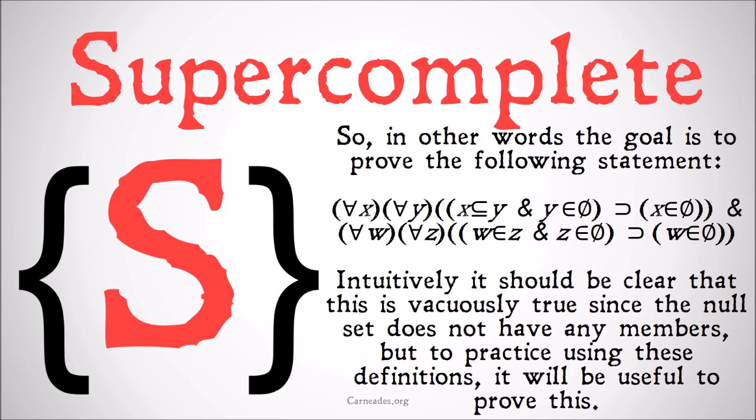Well, we don't know much about x as a subclass of y or w as a member of z. Those could be true or could be false, depending on which x and y and w and z you pick. But the second half of the conjunction, we have a pretty good idea of what's going on here. y is a member of the null set and z is a member of the null set. We can tell that both of those are false just based on the definition of the null set. If one of the conjuncts is false, the whole conjunction is false.